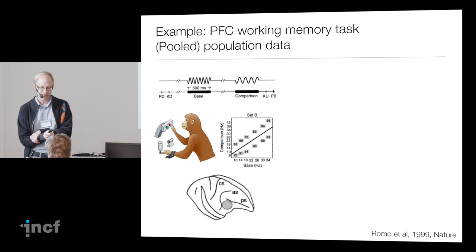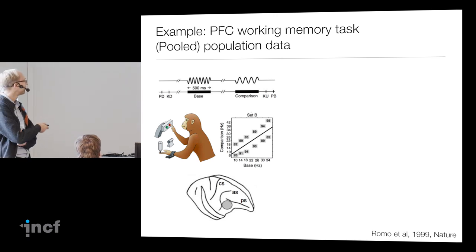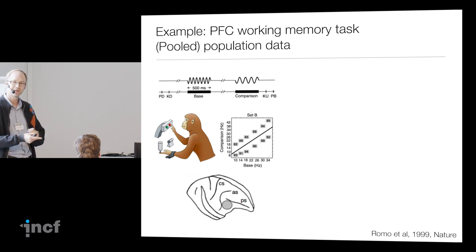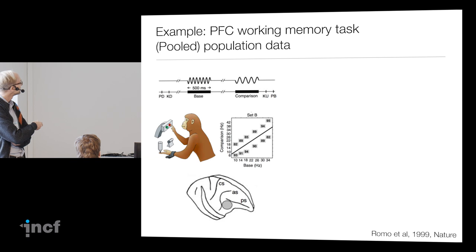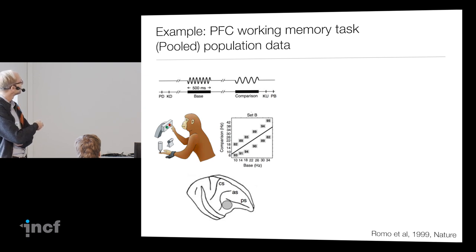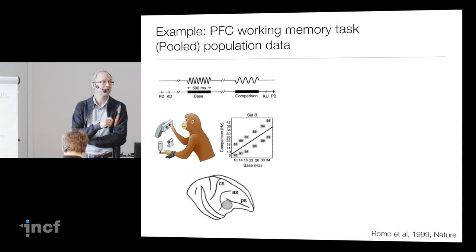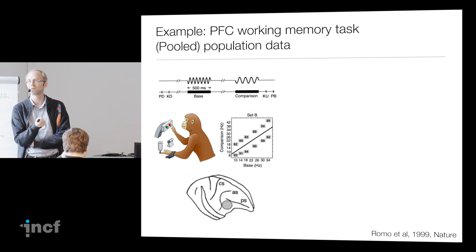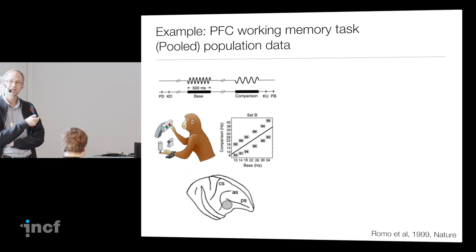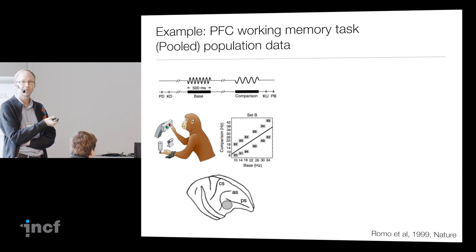The example we're going to work on is a classical working memory task, more than 20 years old, done by Ranulfo Romo. A monkey receives a vibratory stimulus frequency on its fingertip — a little vibration at a particular frequency lasting 500 milliseconds. Then there's a three-second delay, and then there's a second stimulus at a particular frequency. The task of the monkey is to determine whether the first stimulus frequency was larger than the second. The monkey has two buttons — one if it was larger, one if it was smaller — and if it gets it right, it gets a juice reward.